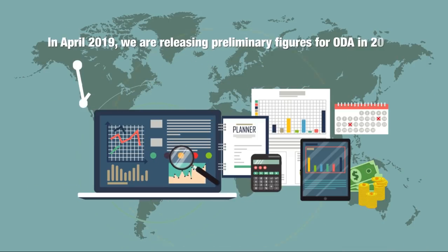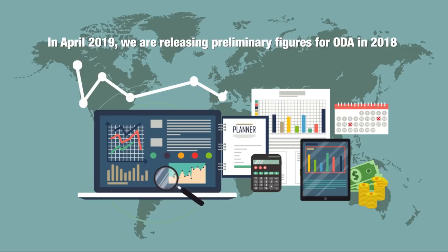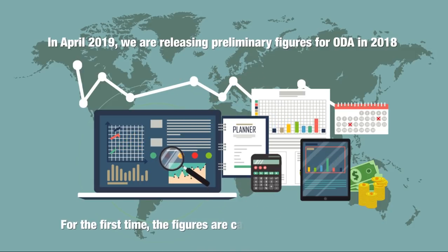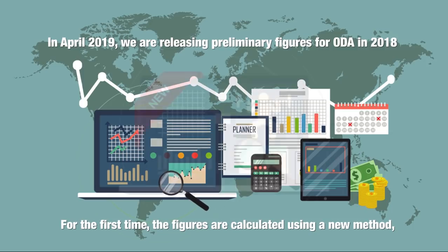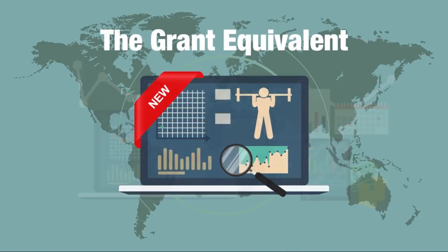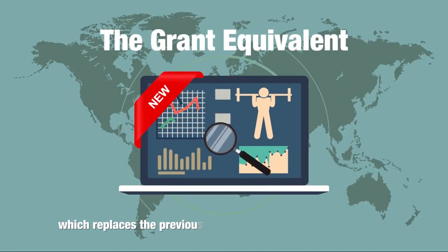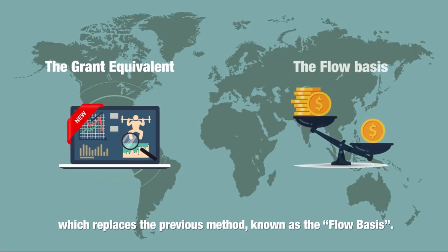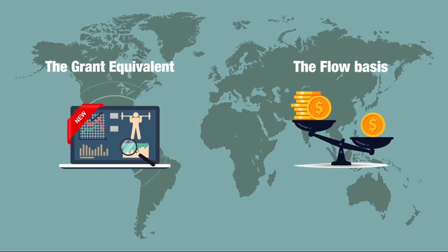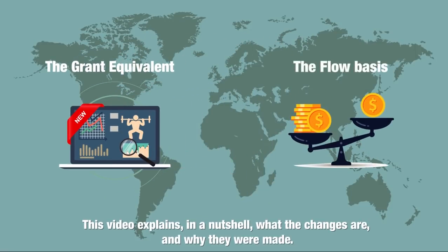In April 2019, we are releasing preliminary figures for ODA in 2018. For the first time, the figures are calculated using a new method, the grant equivalent, which replaces the previous method known as the flow basis. This video explains, in a nutshell, what the changes are and why they were made.